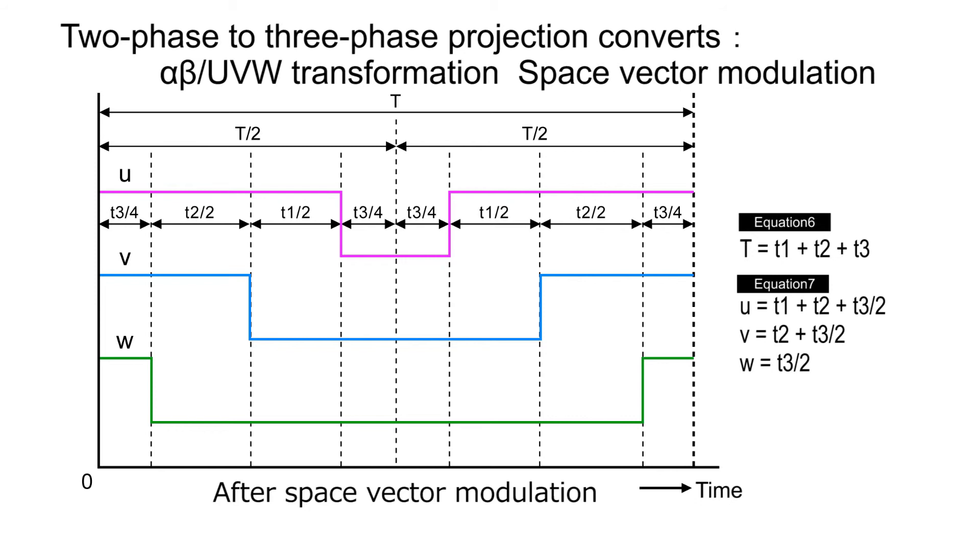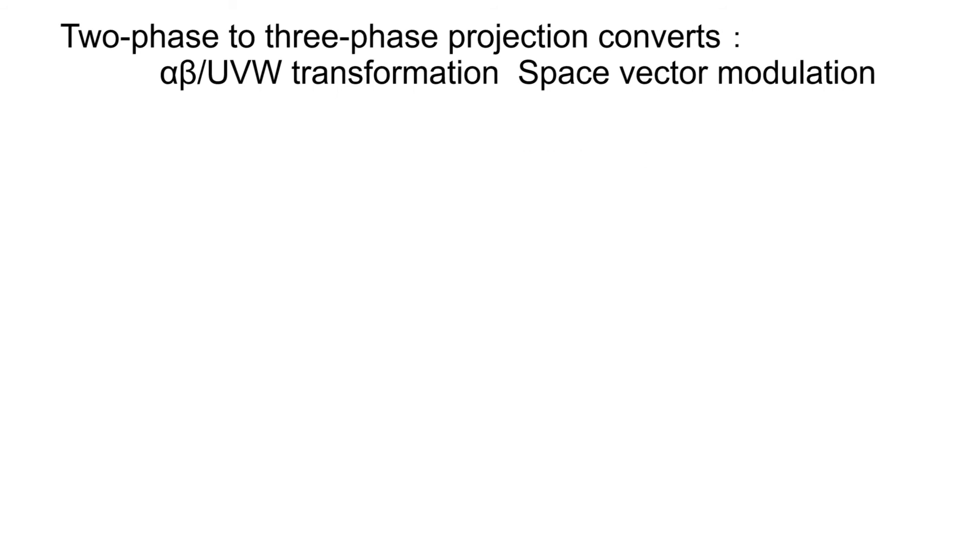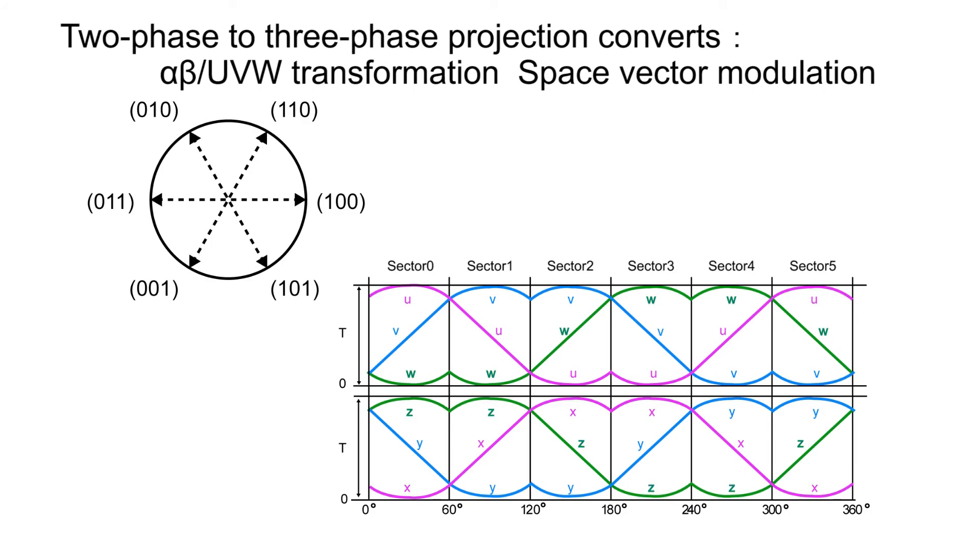Thus, the waveforms of U, V, and W which were calculated are shown in the figure. Considering the symmetry of the waveforms, the intervals between the edges of the waveforms are made one-half of T1 or T2, or one-fourth of T3. The sum of the periods during which U, V, or W is 1 in a cycle is calculated by equation 7. Now, the space vector modulation to one voltage vector was completed.